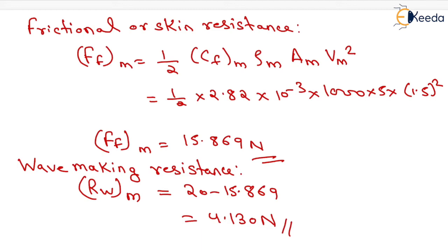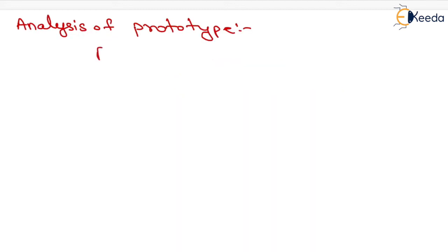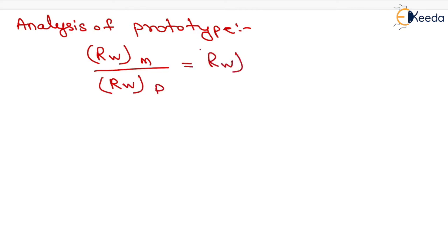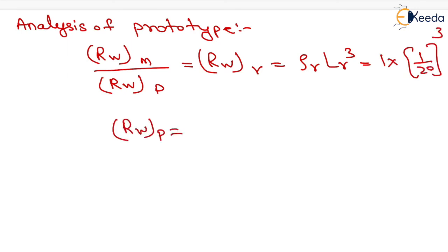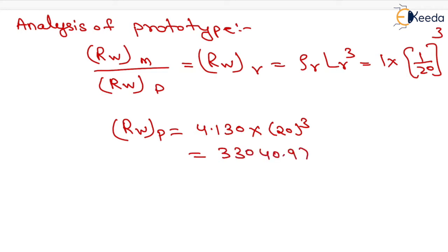Now we analyze the prototype. Rw for model upon Rw for prototype equals rho_r into Lr cubed, which equals 1 into (1 by 20) cubed. Therefore wave making resistance for prototype equals 4.130 into 20 cubed, which equals 33040.97 Newton.